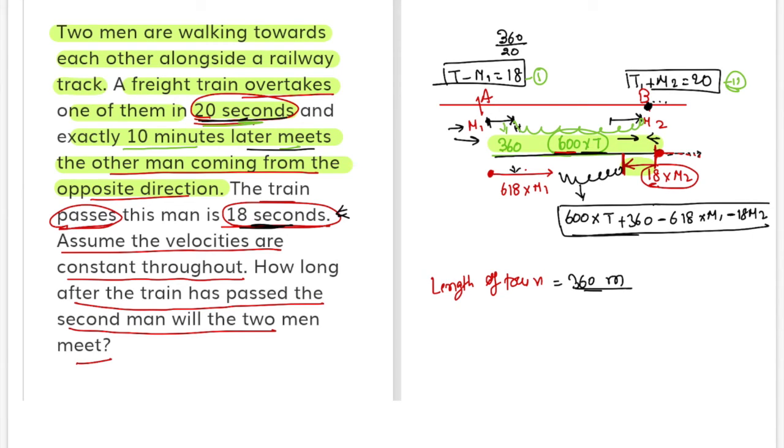Divide by its relative speed, M1 plus M2. We get the time.